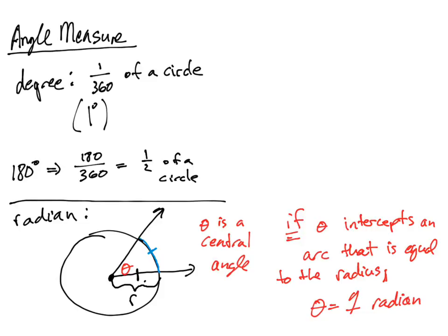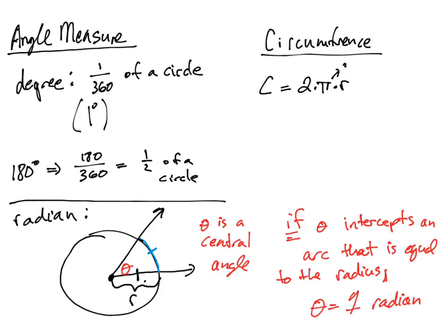You may not have talked about arc length much before, but you've probably talked about circumference. The formula for circumference is C = 2πr. Since π is about 3.14, that's about 6.28 times the radius. So the circumference of a circle is a little more than 6 times the radius length. The important things: 360 degrees makes up a circle, a little more than 6 radii make up the circumference, and we can measure an angle in either degrees or radians.